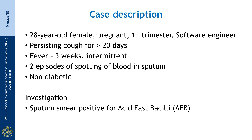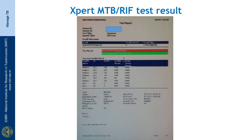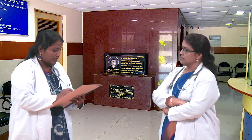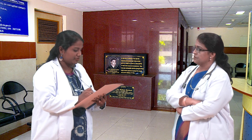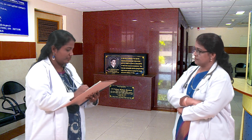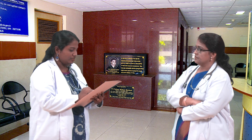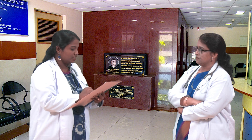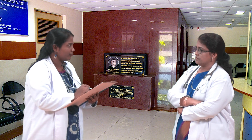She has complaints of persistent cough for more than 20 days. She has fever for 3 weeks which is intermittent. She had 2 episodes of spotting of blood in sputum. She is non-diabetic. Sputum smear is positive for acid-fast bacilli and the CBNAAT result has just come: MTB detected and it is sensitive to rifampicin. She has not taken any prior anti-TB treatment. She is non-reactive for HIV and has no other concomitant illness or medications. She is pregnant for 10 weeks now.